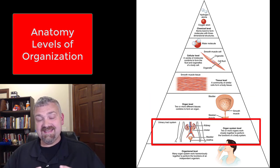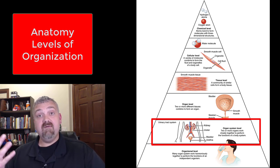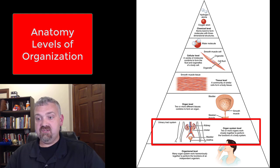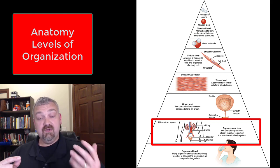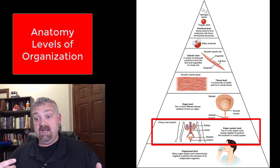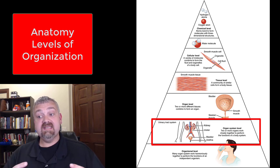Then when you take two or more organs and put them together with a specific job to do, we now have an organ system. So like the picture here shows the kidneys would be an organ, the bladder would be an organ, but they work together along with the ureters and the urethra to produce and store and get rid of urine. So they work together as an organ system.